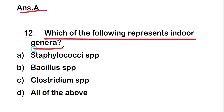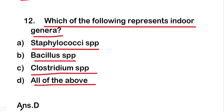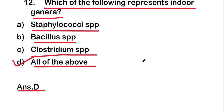Next question: which of the following represents indoor genera? The options are Staphylococcus species, Bacillus species, Clostridium species, or all of the above. The right answer is option D, all of the above. Staphylococcus, Bacillus, and Clostridium all represent indoor genera.